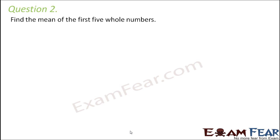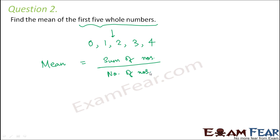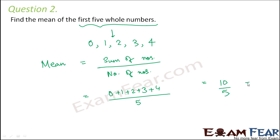Question number 2: find the mean of the first 5 whole numbers. Whole numbers start from 0 to infinity, so the first 5 whole numbers are 0, 1, 2, 3, and 4. Mean equals the sum of the numbers divided by the count of numbers. So mean = (0 + 1 + 2 + 3 + 4) divided by 5 = 10 divided by 5 = 2. The mean of the first 5 whole numbers is 2.